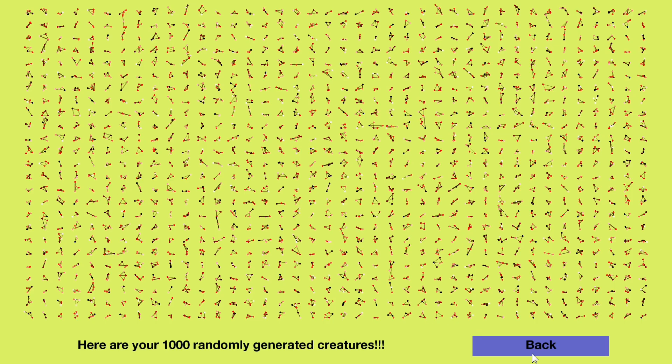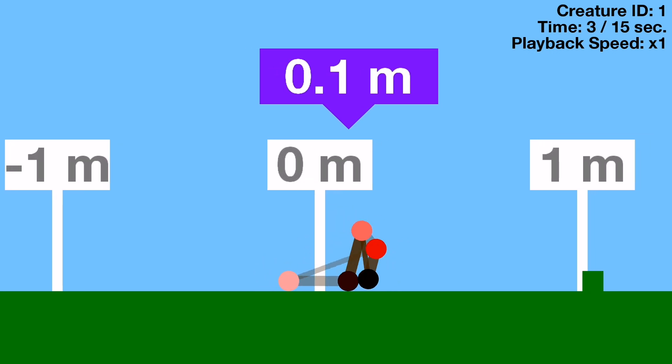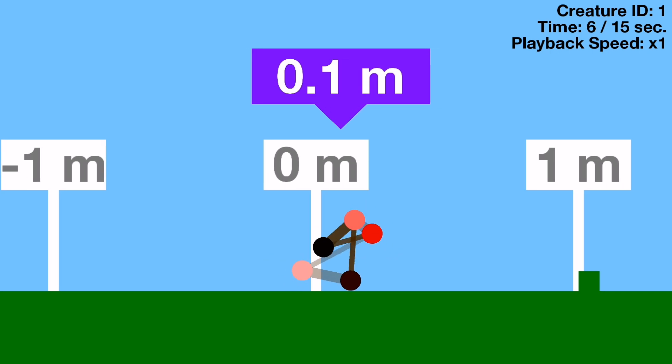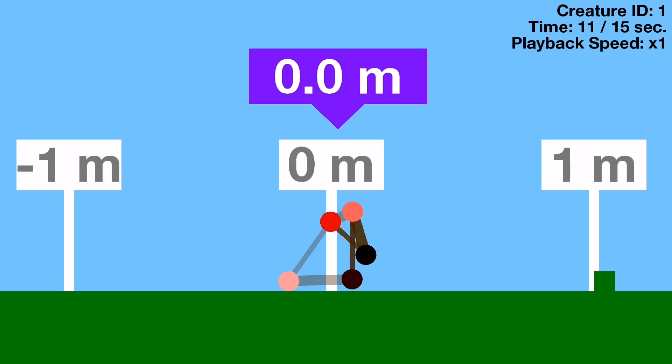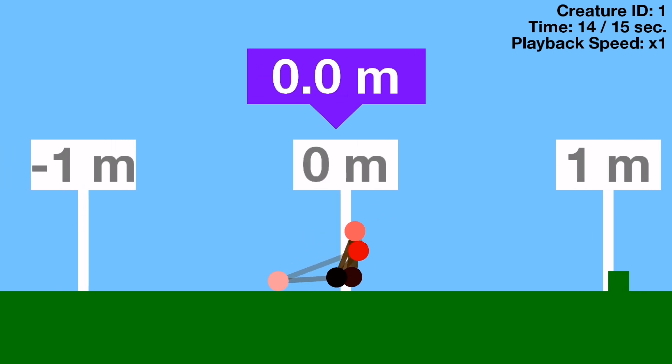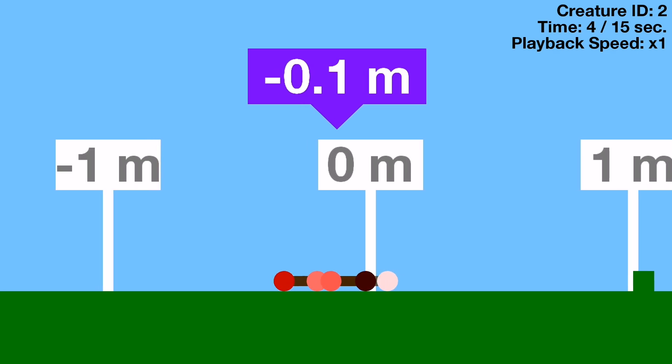We're back with more challenges the creatures must face. This time we've got hurdles—well, they're really just bumps, but I'll call them hurdles. So like before, we've got 1,000 randomly generated creatures, and they will each have 15 seconds to show how well they can move to the right. But unlike last time, they'll have hurdles in the way. There's a hurdle every meter, and each hurdle is 8 centimeters by 8 centimeters. Will they learn how to cope with that? Let's find out!